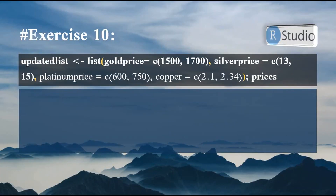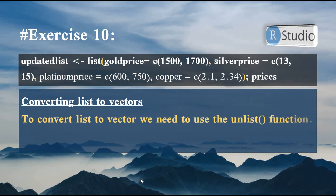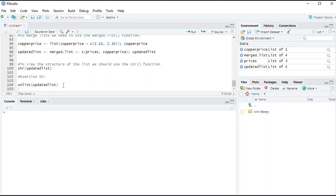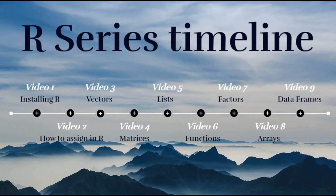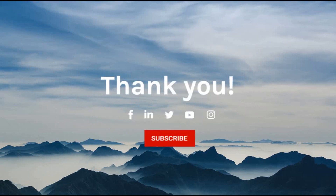In exercise ten we learn how to convert a list to a vector using the unlist() function. We write unlist(updated_list), and running it in RStudio gives all values labeled as gold price 1, gold price 2, silver price 1, and so on. That brings us to the end of video five in our series. The next video will be about functions and important packages. Thank you for watching.